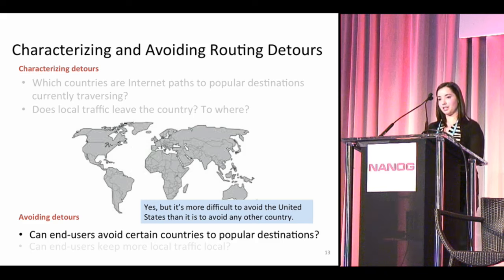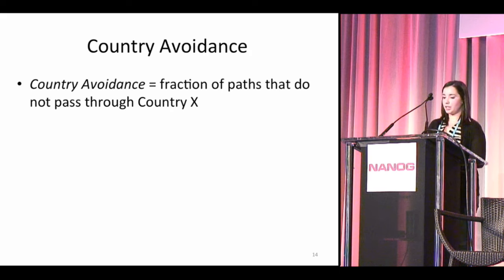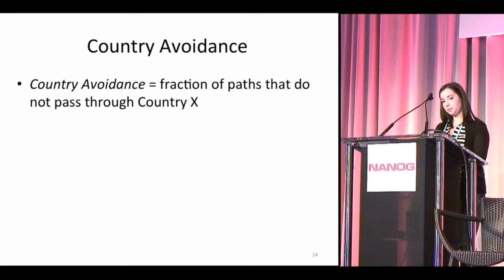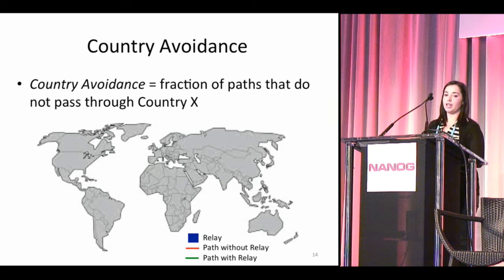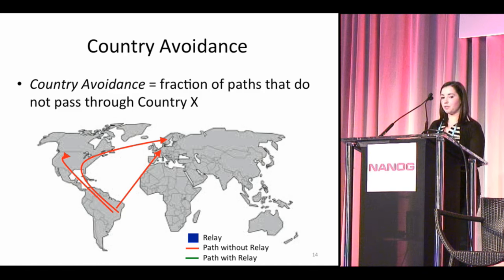This brings me to the second part of our work on avoiding routing detours through surveillance states. We found that relays can help avoid most countries most of the time, but it's significantly more difficult to avoid the United States and sometimes impossible. We had to define some way to measure country avoidance — how avoidable a country is. This is defined by the fraction of paths that do not pass through country X, where X is the country we want to avoid.